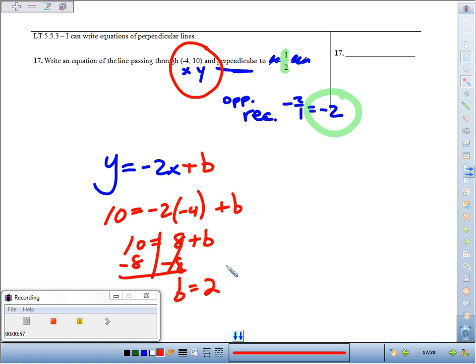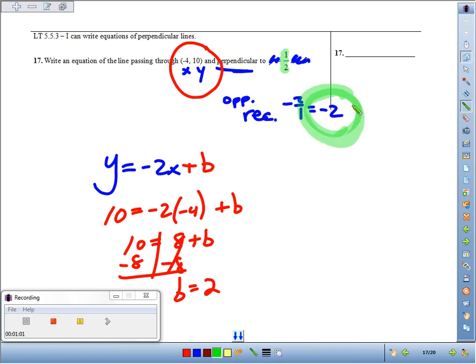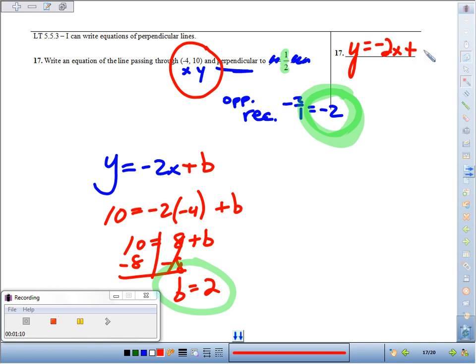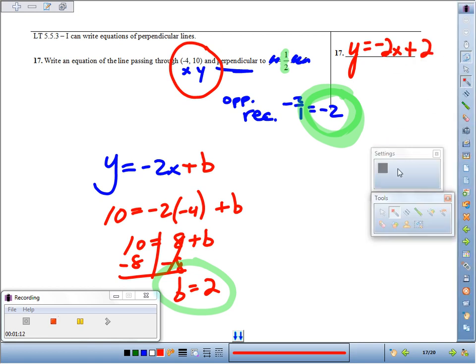You've got your two pieces: the perpendicular slope (or opposite reciprocal slope) of -2, and the y-intercept of 2. Put it together: y equals our slope -2 times x plus our y-intercept, which in this case is 2. You can always check your work.